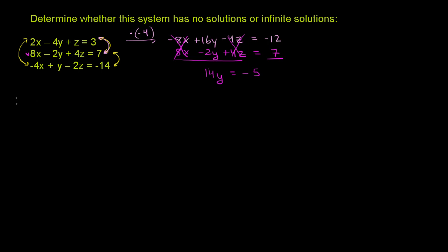So once again, you have an 8x. We want to eliminate the x's. You have an 8x. Here you have a negative 4x. If you multiply this times 2, this is going to become a negative 8x and can cancel with this top one. The top equation is 8x minus 2y plus 4z is equal to 7.